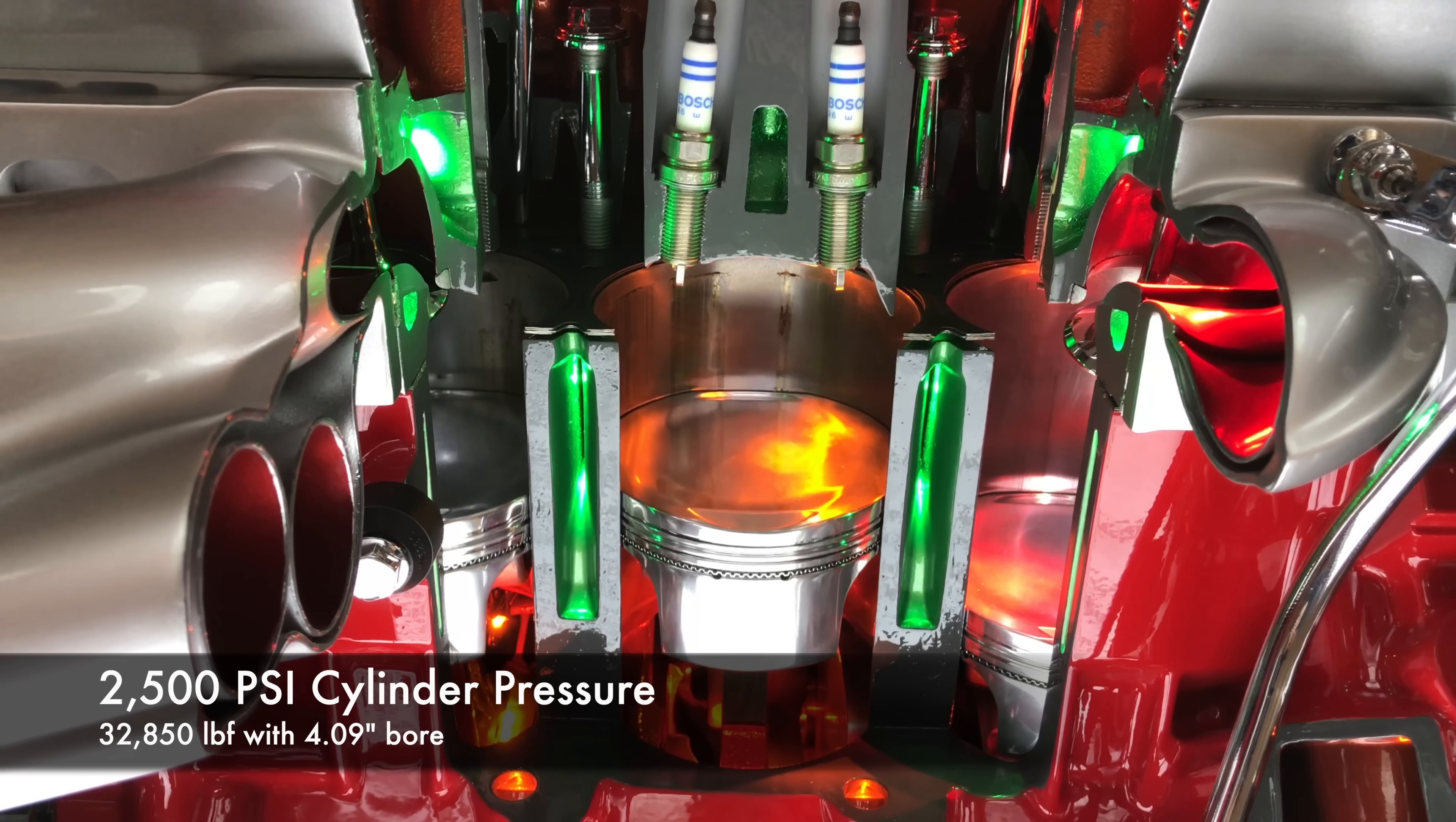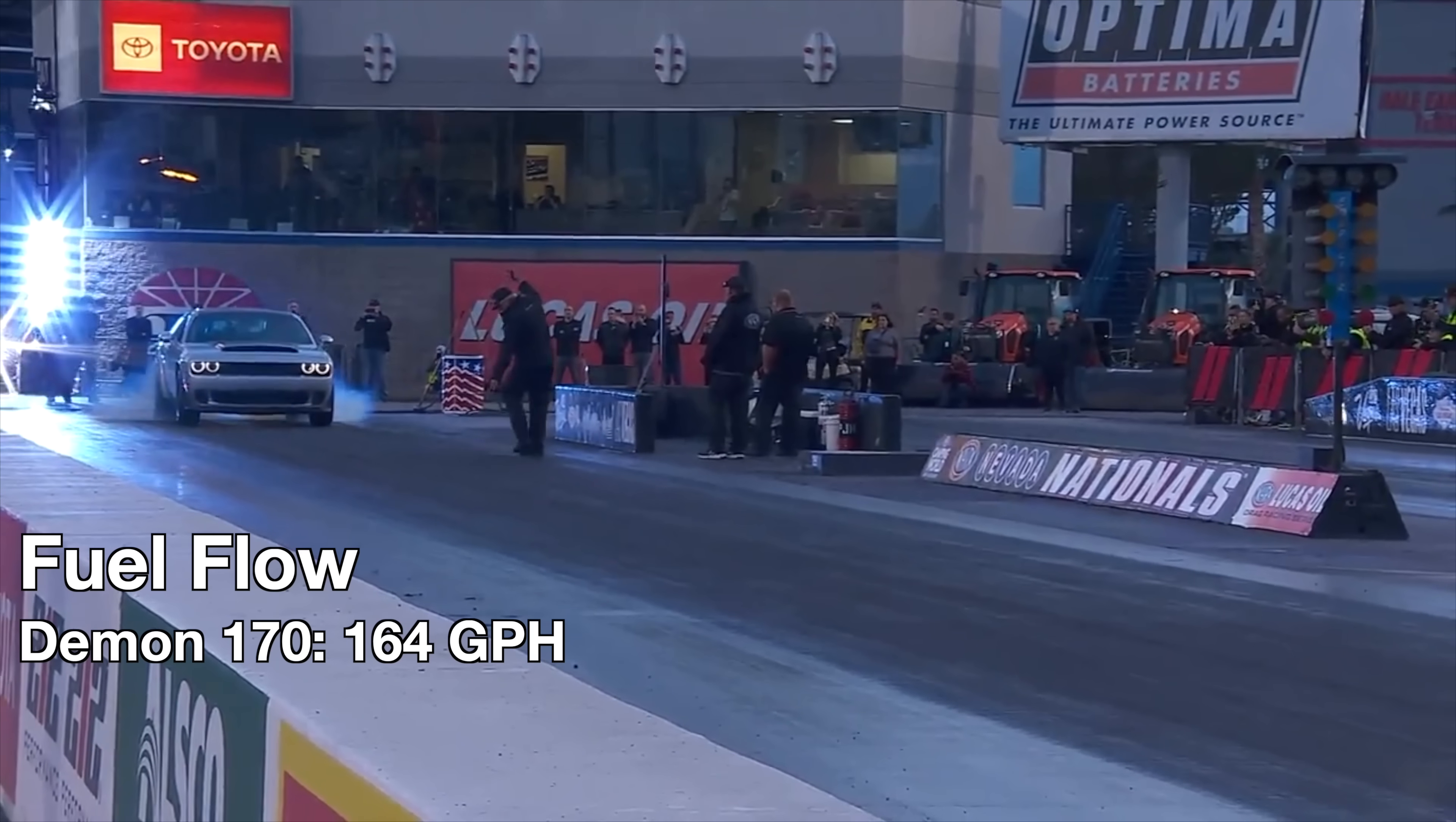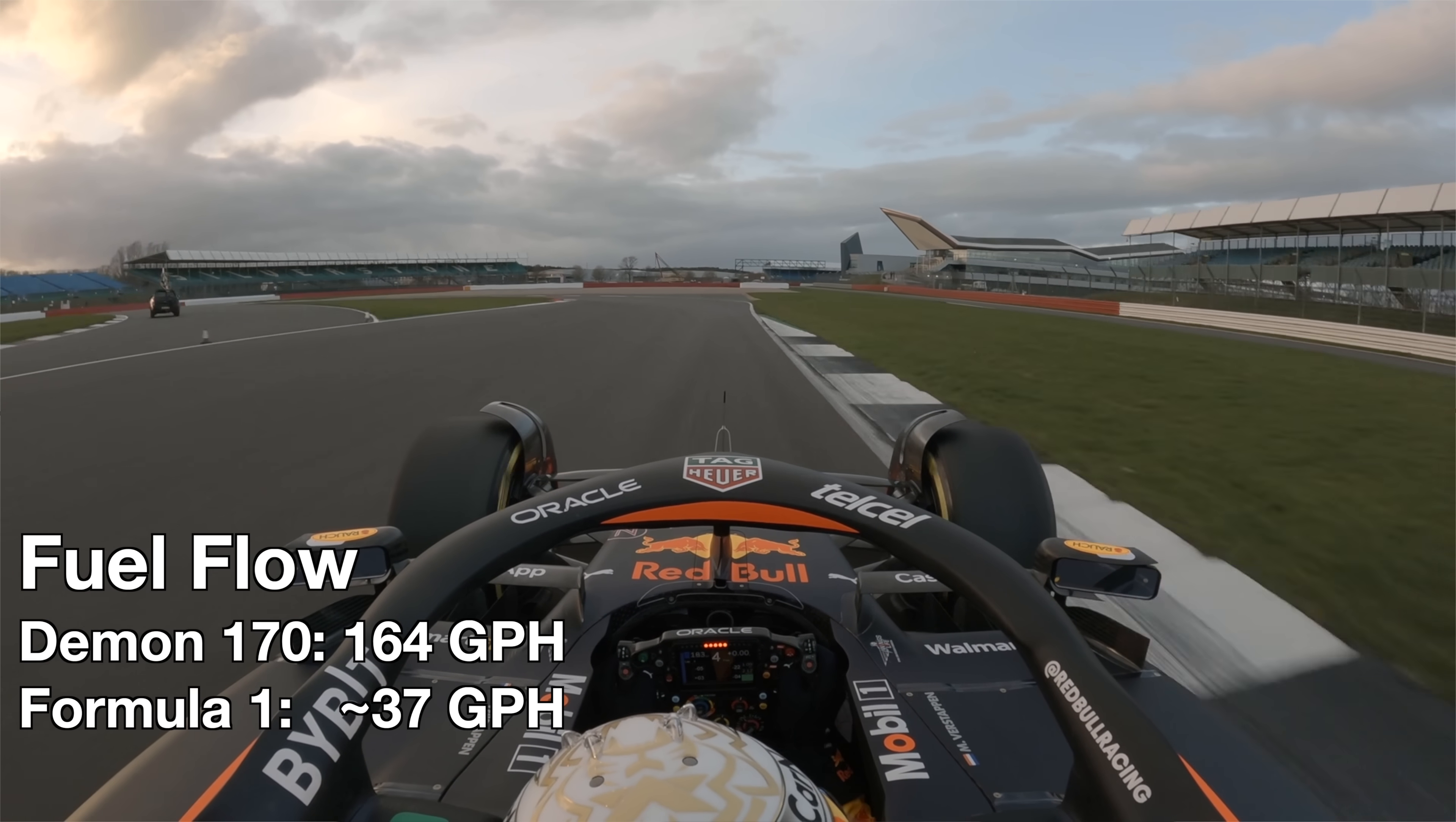It generates cylinder pressures equal to the weight of about seven and a half Dodge Demons pressing down on a single piston. The fuel injectors are capable of providing 164 gallons of fuel per hour. For context, that's more than four times the maximum fuel flow of a modern F1 engine, which makes similar power.